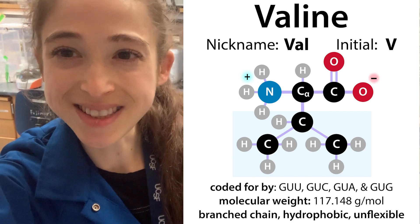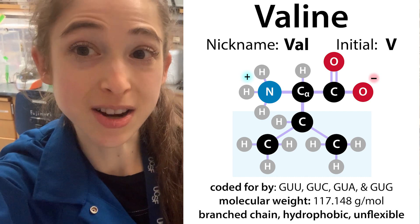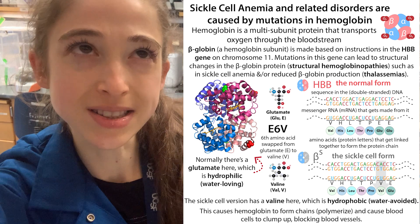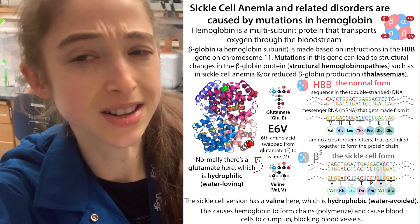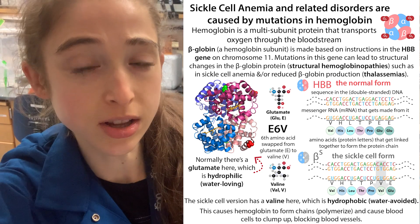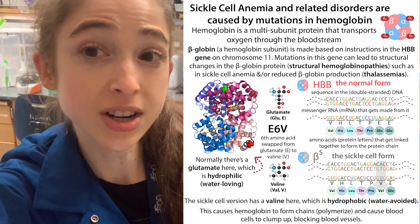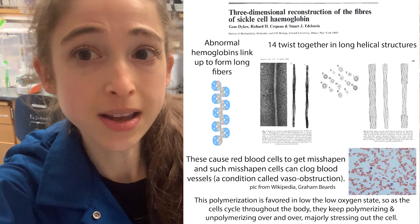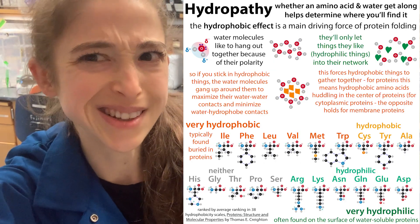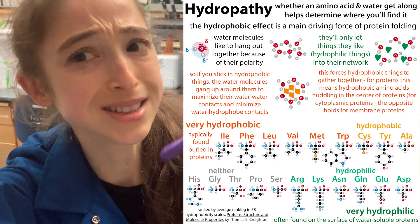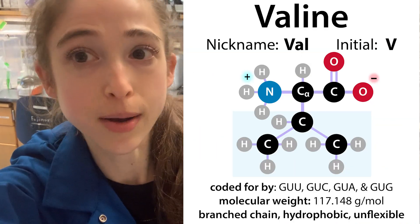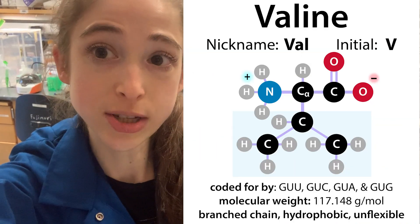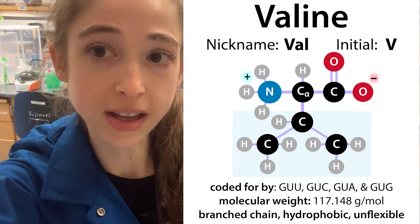Every day is Valine Day, so let's talk about some reasons to love valine, as well as some reasons not to love when it's on the surface of proteins such as hemoglobin, which can cause sickle cell anemia, where these proteins are clumping up because valine likes to be on the inside of proteins, not the outside. So let's talk about why this amino acid is special and cool.